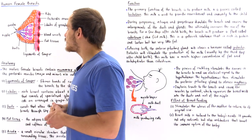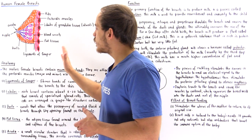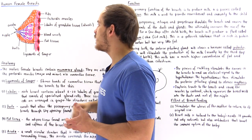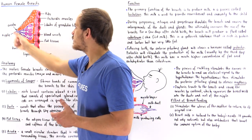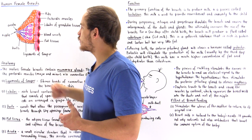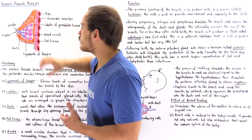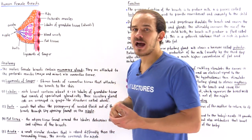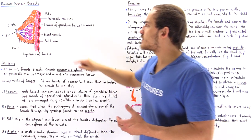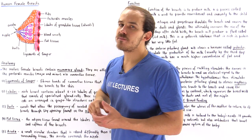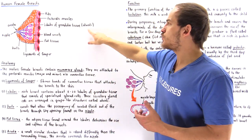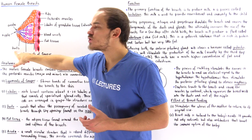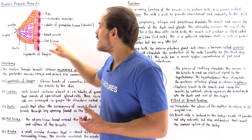What about the breast itself? The breast is found to the left of the pectoralis muscle. At the center of the breast we have the mammary gland, and the mammary gland consists of the lobules of glandular tissue, also known as alveoli, as well as the milk ducts.